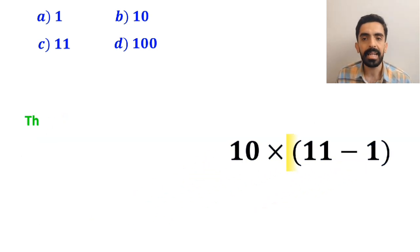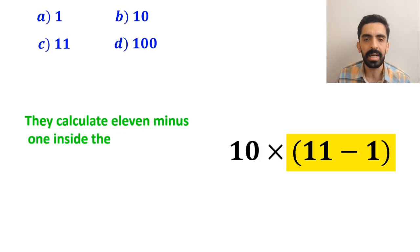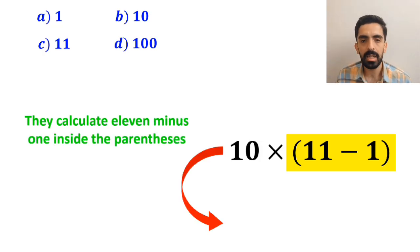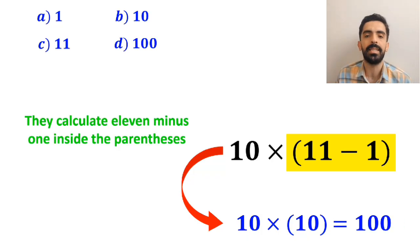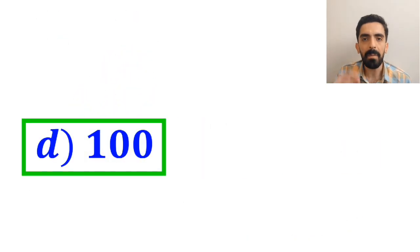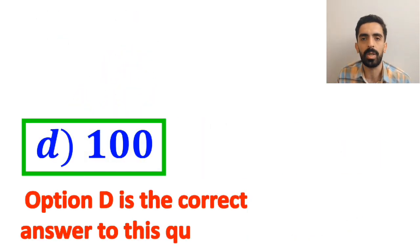In the next step, they calculate 11 - 1 inside the parenthesis, which becomes 10 × 10. And finally, the value of this expression equals 100. Then without any hesitation, they quickly say that option C is the correct answer to this question.